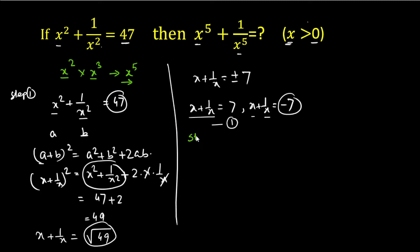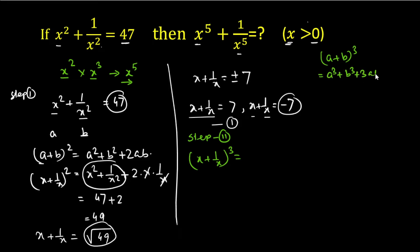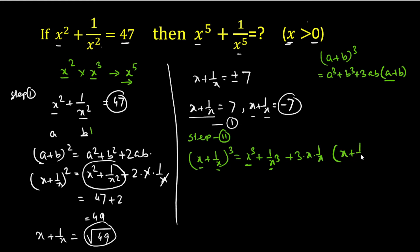Step 2: We'll cube equation 1. So (x + 1/x)³ uses the formula (a + b)³ = a³ + b³ + 3ab(a + b). Substituting a = x and b = 1/x, we get x³ + 1/x³ + 3 times x times 1/x times (x + 1/x). The x and 1/x cancel, and x + 1/x equals 7, so we have 7³ = x³ + 1/x³ + 3 times 7.